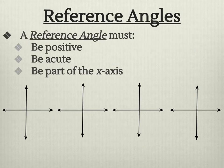So keeping those things in mind, if I'm in just the first quadrant, and I have my initial ray, and then I have this angle, my terminal side, this would be my reference angle. It's positive, it's acute, and it is part of the y-axis.